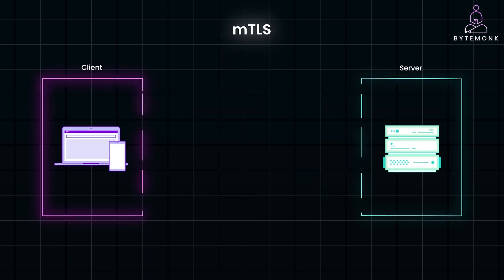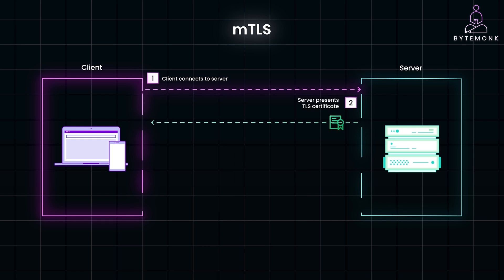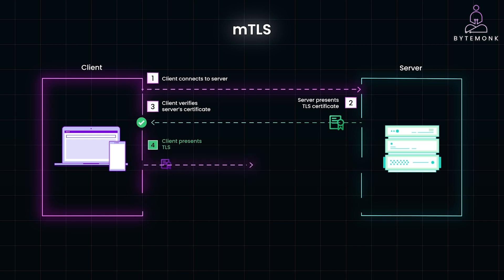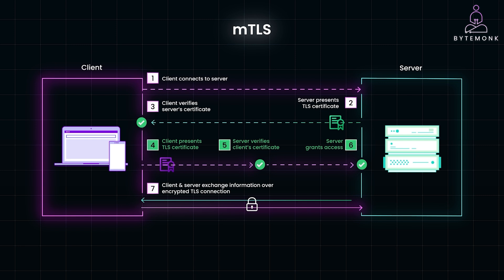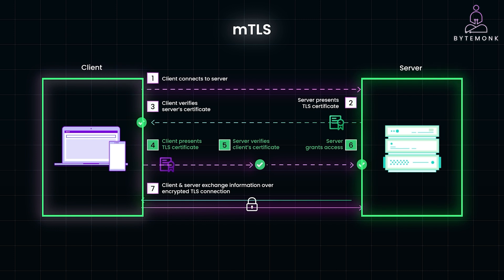In MTLS, both the client and server use certificates, which adds a few extra steps to the process. The client connects to the server, the server presents its TLS certificate, the client verifies the server's certificate, and then the server requests and verifies the client's certificate before granting access. If all checks pass, the client and server exchange data over the encrypted connection. While this extra handshake adds some complexity, it ensures that both parties are trusted, making it ideal for secure environments like microservices or zero-trust networks.